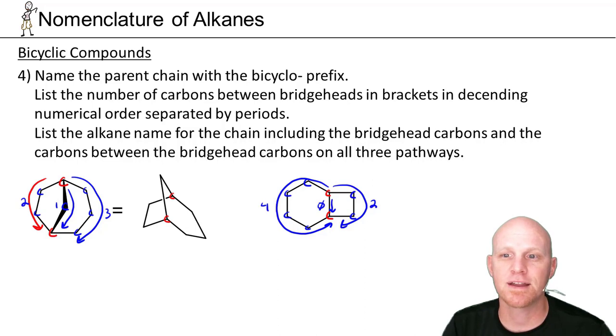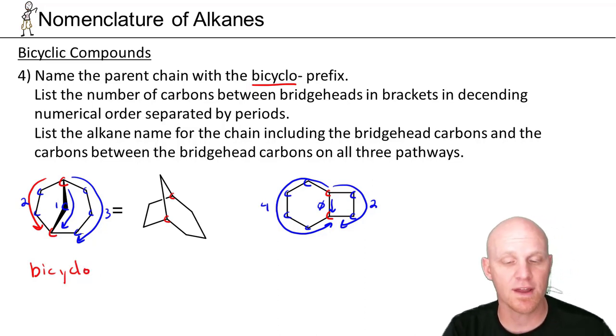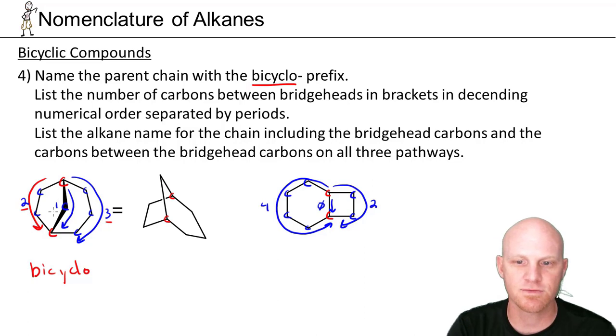The next rule here shows you how to name the parent chain with the bicyclo prefix. We just start this guy off saying bicyclo. We don't have any substituents to name, but we'd name them before that if we had them. And it turns out the number of carbons in the overall chain is add up the carbons on each of the three pathways, three, two, one, plus the two bridgeheads. So three plus two is five plus one is six, and the two bridgeheads gives eight. And so this is some form of bicyclooctane.